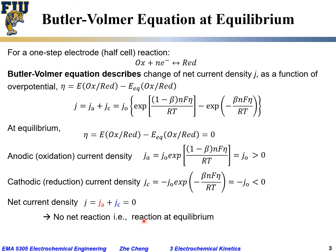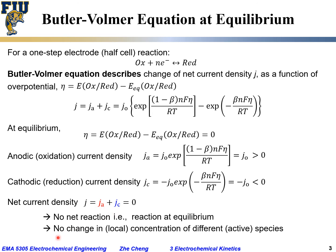This confirms what we already know: at equilibrium there is no net current and no net electrochemical reaction. The system is at equilibrium, so there is no depletion of reactants or continuous generation of products, meaning no net change in local concentration of any species over time. Despite there always being some anodic and cathodic partial currents, they exactly balance — so net current is zero and concentrations of oxidized and reduced species remain constant.